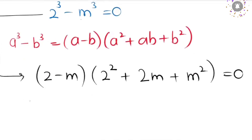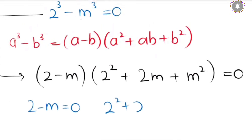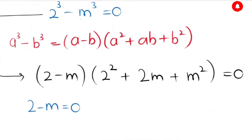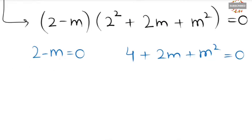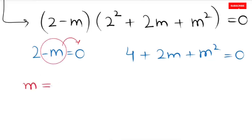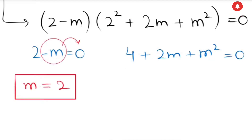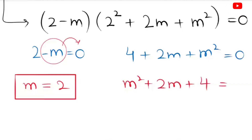Here we get two cases. Case one: 2 minus m equals 0, which gives m equals 2. Case two: 4 plus 2m plus m squared equals 0. Rearranging according to power, we get m squared plus 2m plus 4 equals 0.